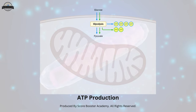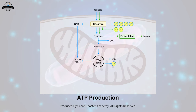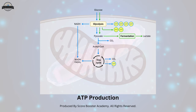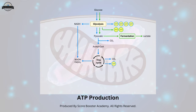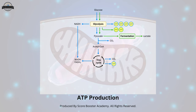Pyruvate then enters the mitochondria, where it undergoes further breakdown in the Krebs cycle. This process generates carbon dioxide and high-energy electron carriers, NADH and FADH2.